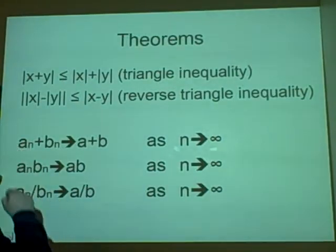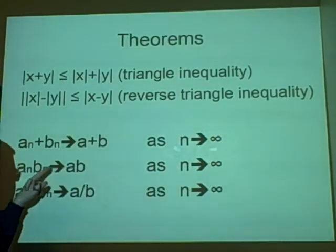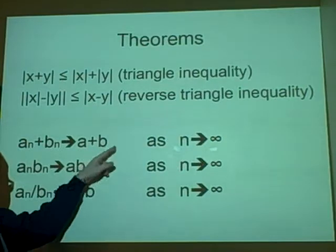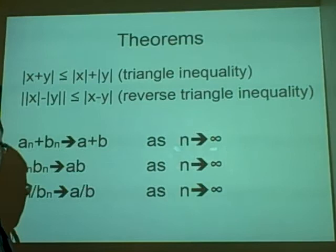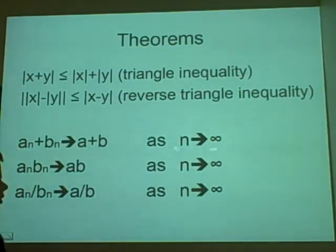So if we have a_n going to a limit of a, and b_n going to a limit of b, then a_n plus b_n goes towards a plus b. I think that's quite obvious really if you think about it.